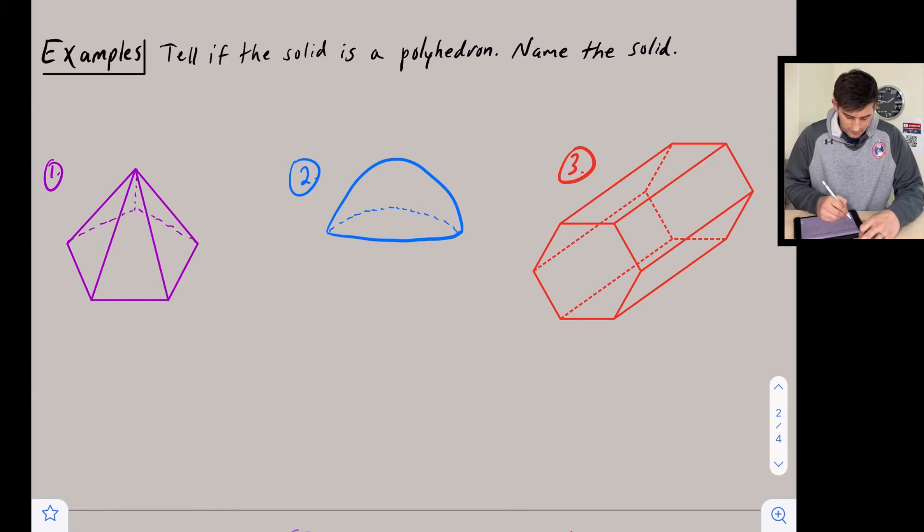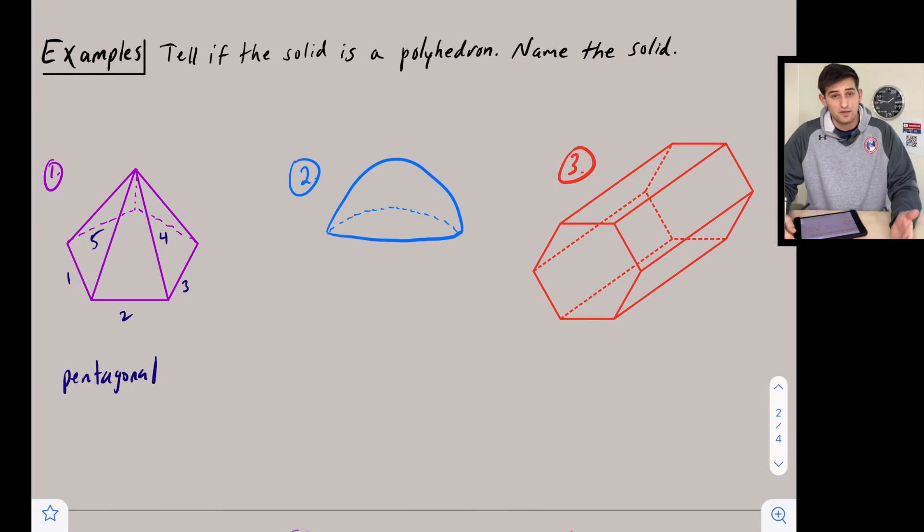Starting with number one, notice we have one, two, three, four, and five edges. So that's going to be pentagonal. It's either a prism or a pyramid—well, here all the faces meet at the top, so this is going to be a pentagonal pyramid.